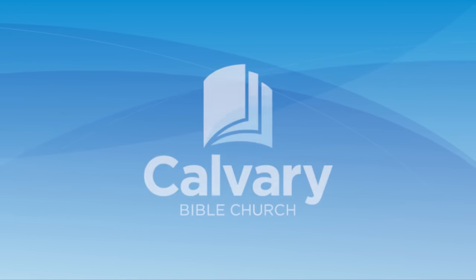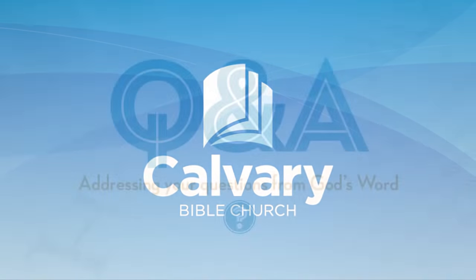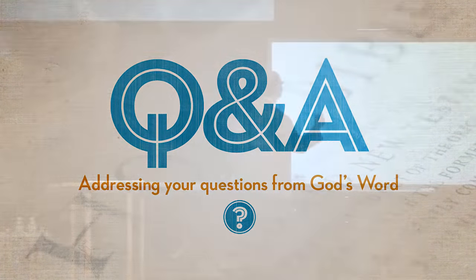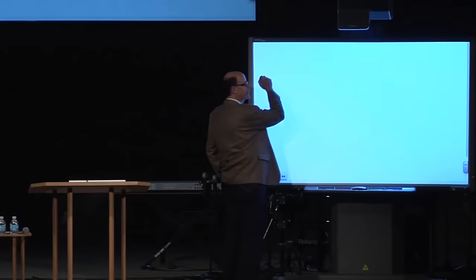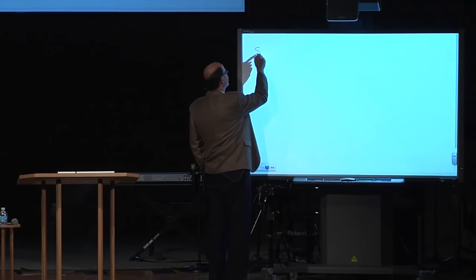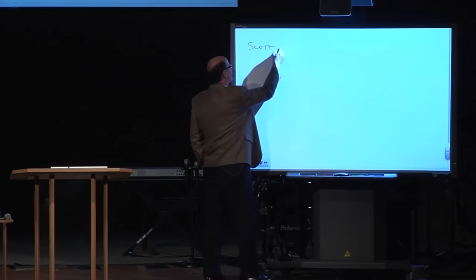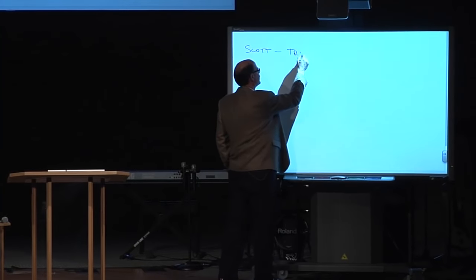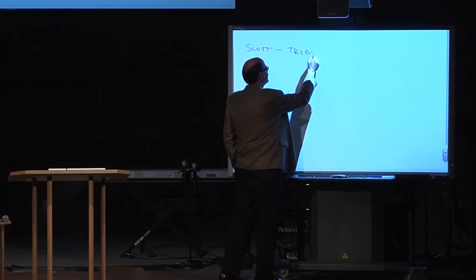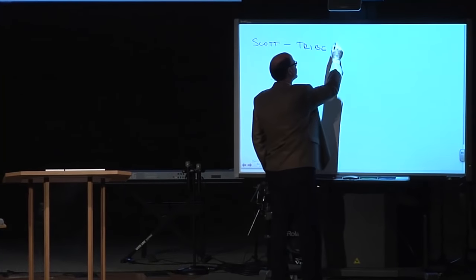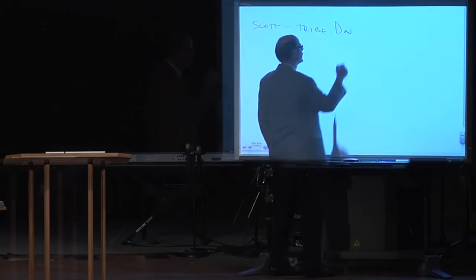A viewer named Scott asks why the tribe of Dan has been omitted in the book of Revelation. The speaker acknowledges it's a great question, and notes that the omission of Dan is not limited to Revelation — it's going to be an interesting topic to explore.